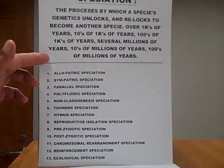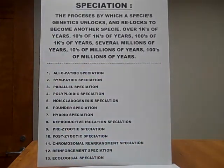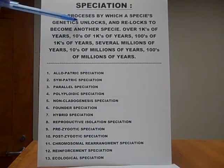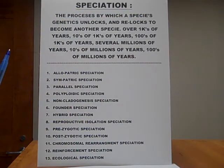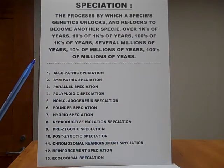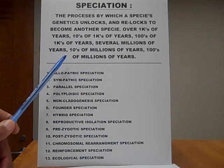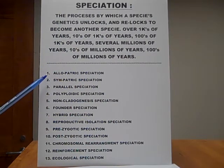We will go now to speciation. Speciation is the process by which a species' genetics unlocks, and then having that species cease to be that species, and then relocks to become another species — over thousands of years, tens of millions of years, hundreds of millions of years. These are the means by which species stop being the species that they are and turn into another species.